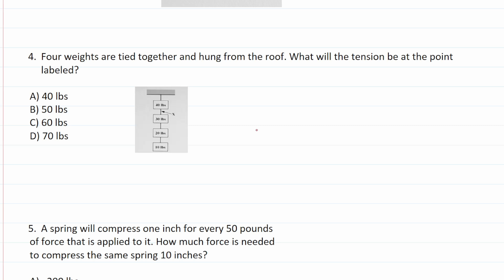Number four says four weights are tied together and hung from the roof. What will the tension be at the point labeled X? I'm going to draw a line here so it's very clear as to which weights are above and which weights are below X. To calculate the total tension at point X, all we have to do is add up all these weights that are below X. So that's going to be 30, 20, and 10. You should be able to do this one mentally. 30 and 20 is 50 plus 10 is 60. So the tension at point X is 60 pounds. Let's say I asked you to calculate the tension at, let's say I call this point Y. Again, you would find all the weights that are below point Y, notably 20 and 10. And you would say there are 30 pounds of tension at point Y. So again, let's find the point, add up all the weight that is below that point.